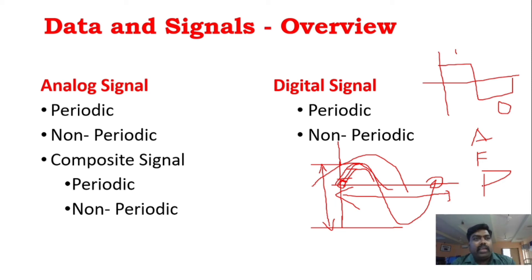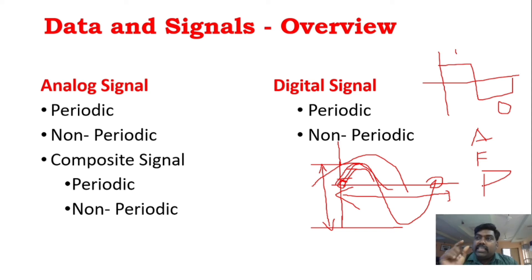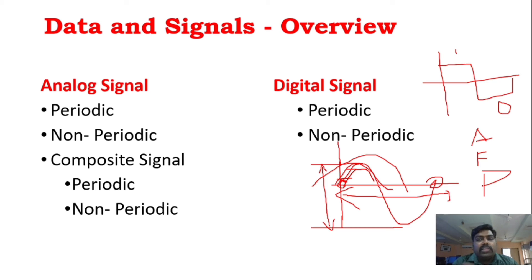Now let's say you are a student and you are going to get into college wearing jeans — that is the original message signal. If it changes — you go wearing something different — then that is not a proper communication; it is an unsuccessful communication. Understand one particular thing: whatever changes take place in the message signal will result in an unsuccessful communication. That's why changes in modulation matter.